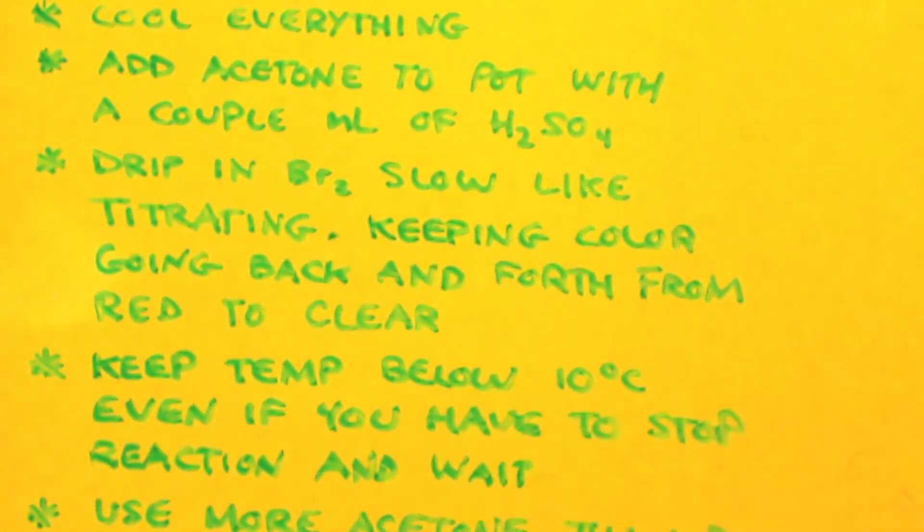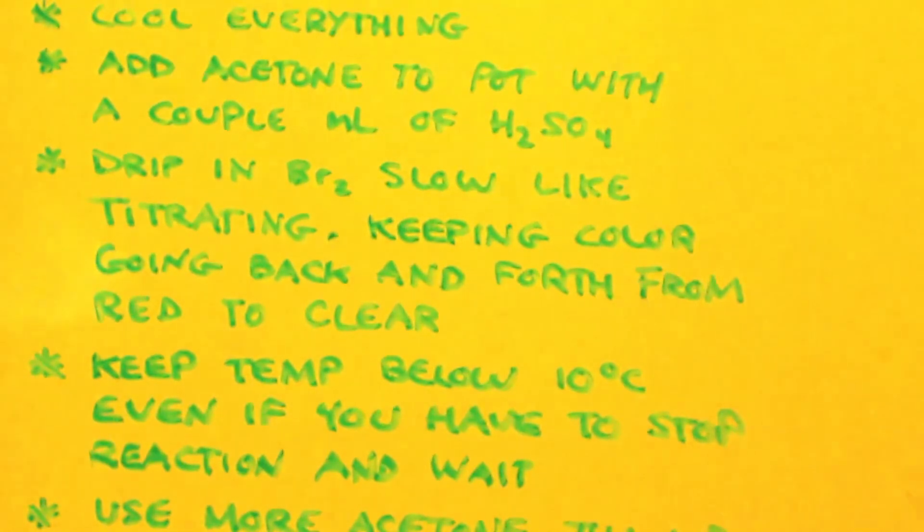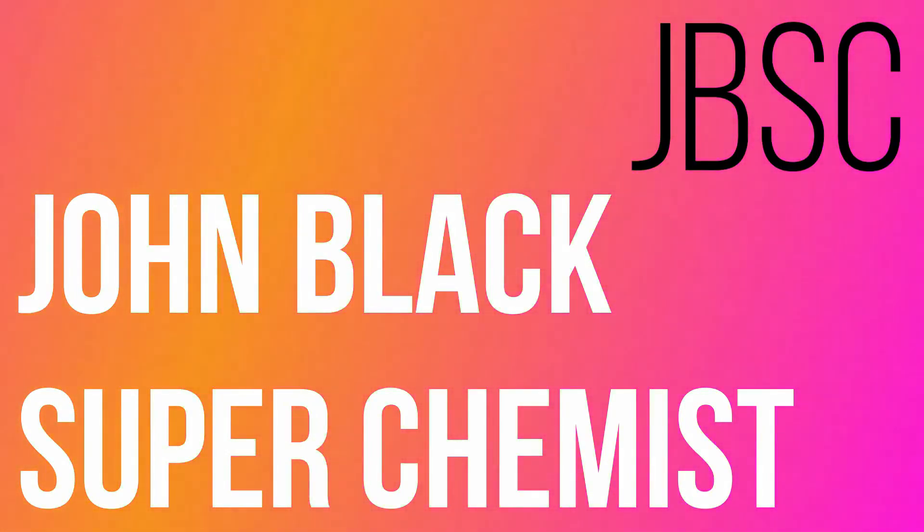Keep it below 10 Celsius. Even if you have to stop the reaction. Let's say your reaction is getting to 10 degrees Celsius, then you stop putting the bromine in. You wait, wait for the pot to cool back down. This is a one-to-one ratio on the bromine and the acetone, but I would probably put in more acetone than bromine. The reason why is because you might have the bromine, it can only attach one time.